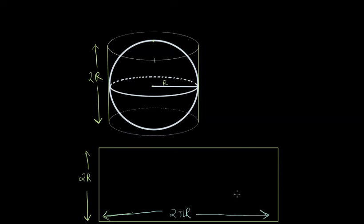And the area of this particular rectangle is of course 2r times 2πr which is 4πr². And that is how we can visualize that the area of a sphere of radius r is 4πr².